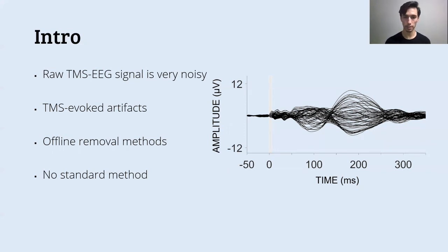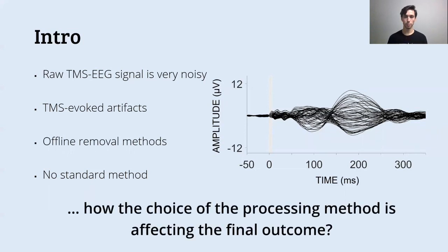So we asked the question, how the choice of the preprocessing method is affecting the final outcome, which can be translated in, to what extent the choice of a researcher to use one method instead of another one will affect the results? Or it can also be seen as, how safely can we compare the results from two different TMS-evoked studies that use different TMS-evoked processing methods?